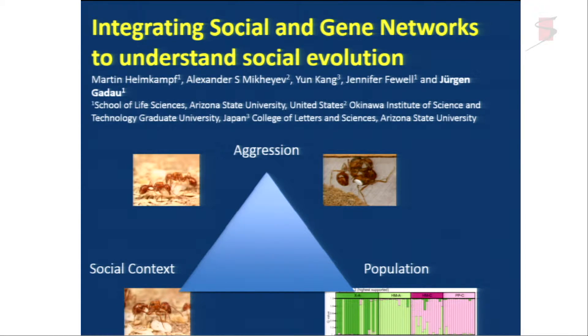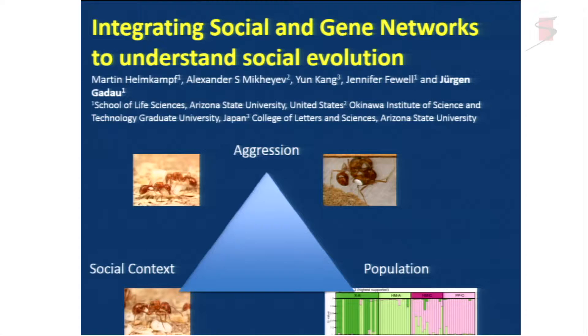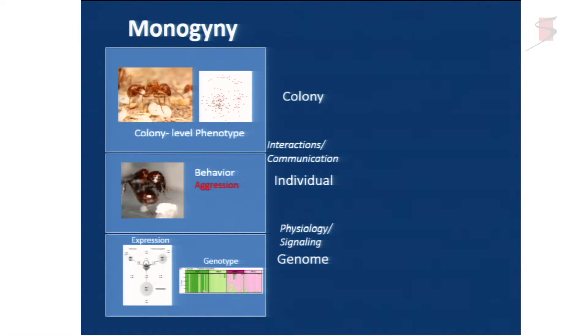I'm not talking about development — I'm talking about adults. I'm interested in the underlying genetic architecture of adaptive traits, specifically behavior, and how the underlying networks change. We looked at three different things: aggression — the interaction between two individuals determining the outcome of group living — social context, and population genetic differences.